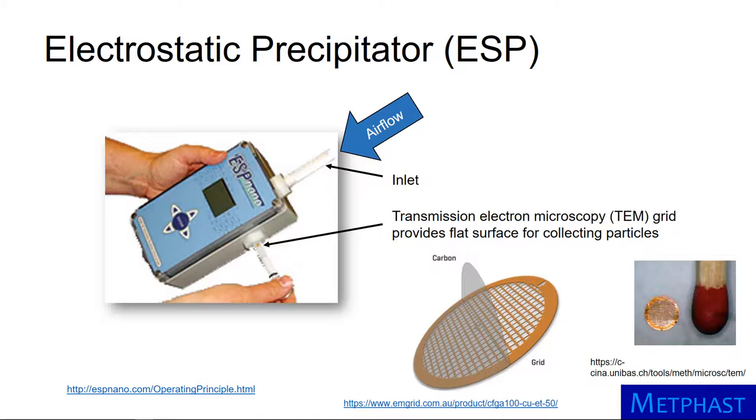It consists of a metal mesh covered with a thin film surface. Air entering the inlet of the ESP is directed to flow over the TEM grid. Electrostatic forces cause particles in the air to migrate and collect on the TEM grid.